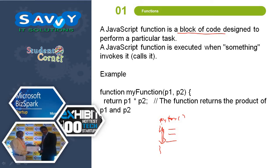If you take any function, the function meaning is same. Function or method, we can call it any way. A JavaScript function is a block of code designed to perform a particular task. A JavaScript function is executed when something invokes it or calls it.